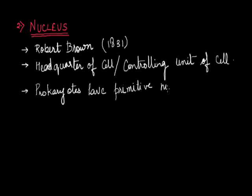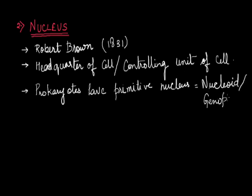We can say that prokaryotes have a primitive type of nucleus, therefore they are called prokaryotes — 'pro' means primitive, 'karyon' means nucleus. This primitive nucleus is called the nucleoid or genophore. In the case of eukaryotes, as you all know, they have a well-defined nucleus.